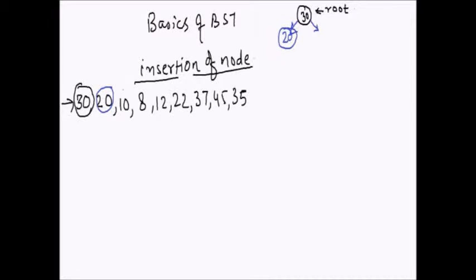Now let's say I enter 10. Can 10 be on the right hand side of 30? No, because that will violate the binary search tree property — it has to be on the left hand side. But the left child of 30 is already occupied with 20, so 10 can't be the left child of 30. We move down to 20. Where should 10 reside — left or right of 20? Since 10 is less than 20, it has to be on the left hand side of 20. This is how the third element 10 is inserted.